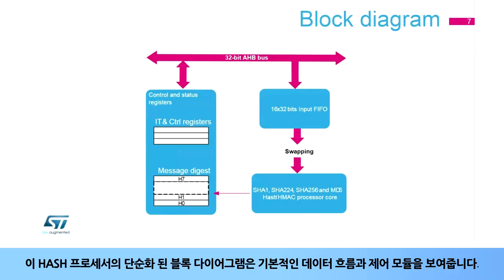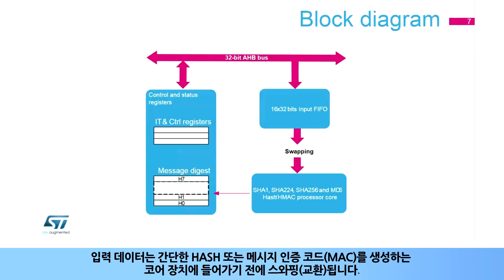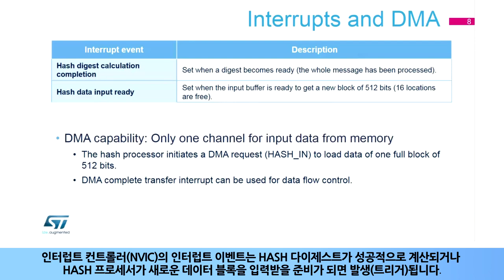This simplified block diagram of the hash processor shows the basic data flow and control modules. The hash processor processes 512-bit data blocks and generates digests of up to 256 bits, depending on the algorithm. Input data may be swapped before entering the core unit, where they will be processed to generate a simple hash or a Message Authentication Code, or MAC. An interrupt in the Nested Vectored Interrupt Controller, or NVIC, is triggered when a hash digest has been successfully calculated, or when the hash processor is ready to accept a new block of data.